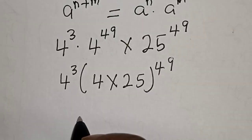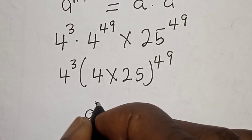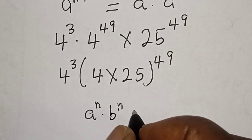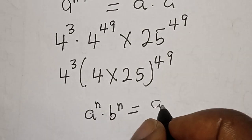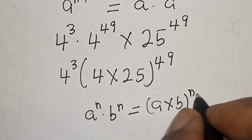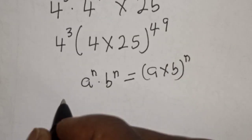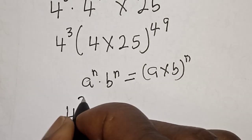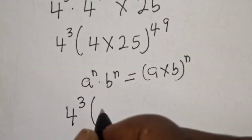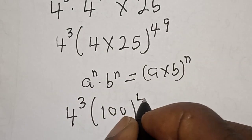Note that if you have a raised to power n multiplied by b raised to power n, this is equal to a multiplied by b, raised to power n. That is how we get this identity. Now we have 4 raised to power 3 multiplied by 4 times 25, which is 100 raised to power 49.